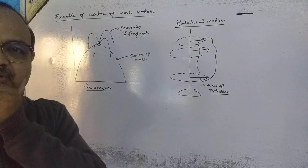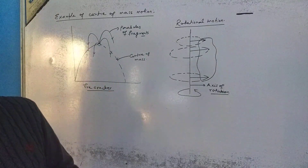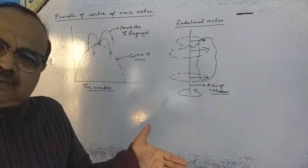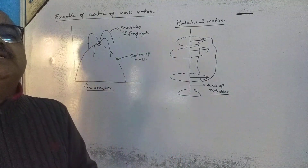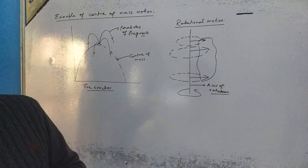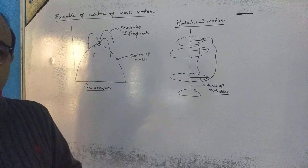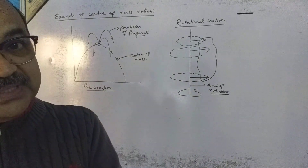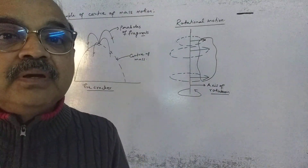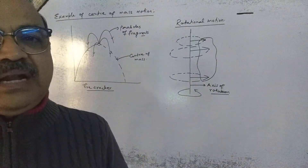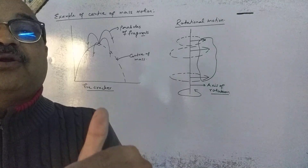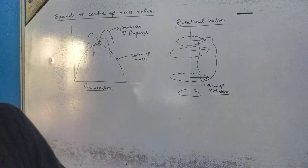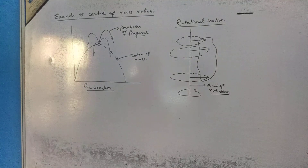These were the things we have discussed regarding the center of mass of the system: its position, the velocity of the center of mass, and momentum. We also gave an example of center of mass motion. Now I simply change my topic.